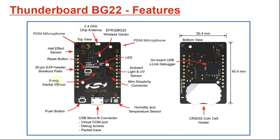Here we have a six-axis inertial sensor, which includes a three-axis accelerometer and gyroscope, through which we can read the accelerometer data and the gyroscope data. We also have an ambient light and ultraviolet sensor, which is used for ambient light sensing.